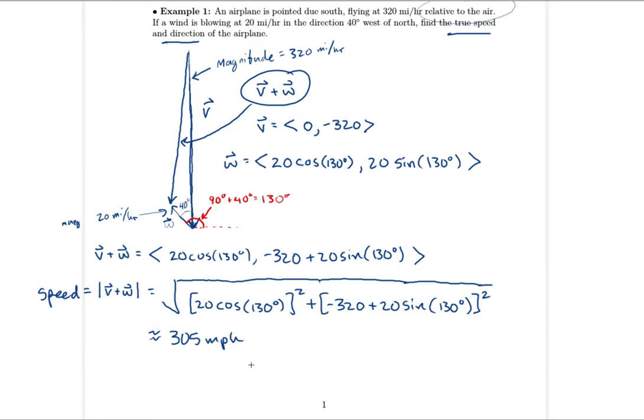This 305 mph makes sense: the pilot was trying to go 320 mph, but the wind is fighting the plane a little bit, so the true speed is slightly less than what the pilot intended. Now let's find the angle — the true direction.